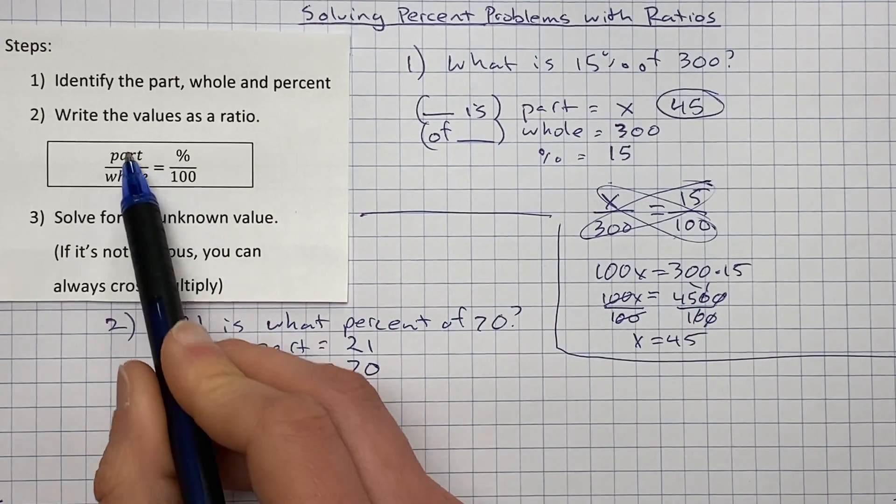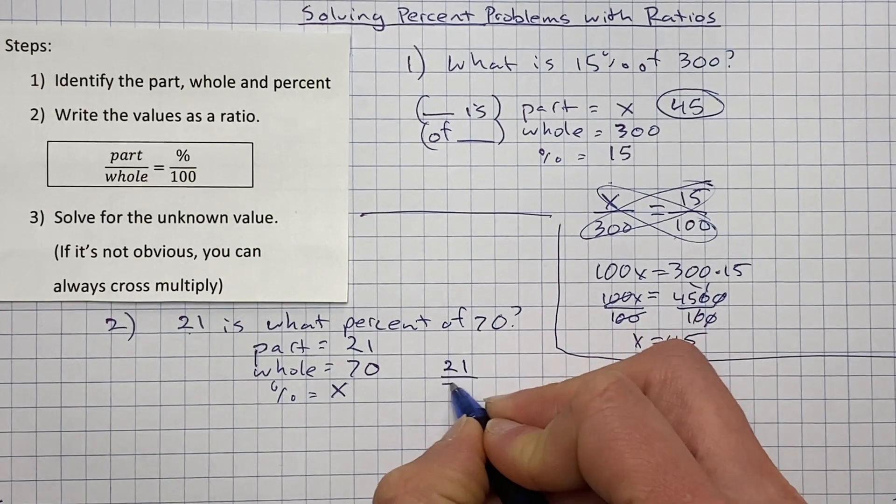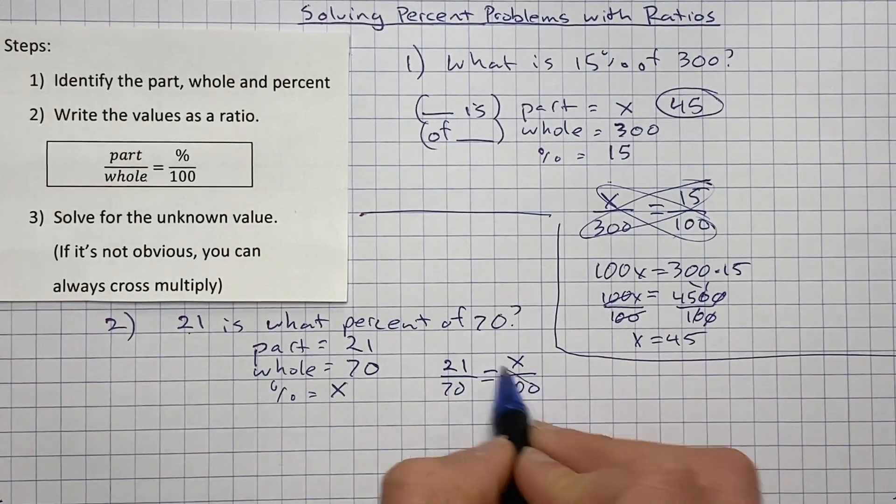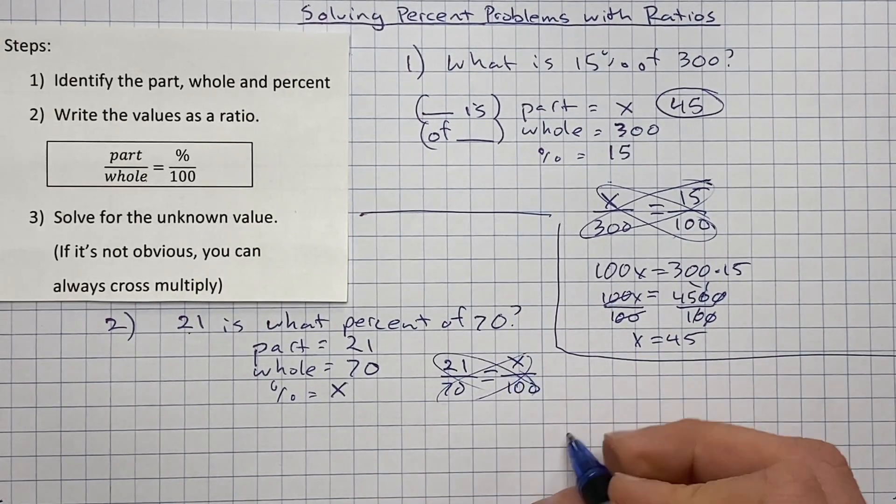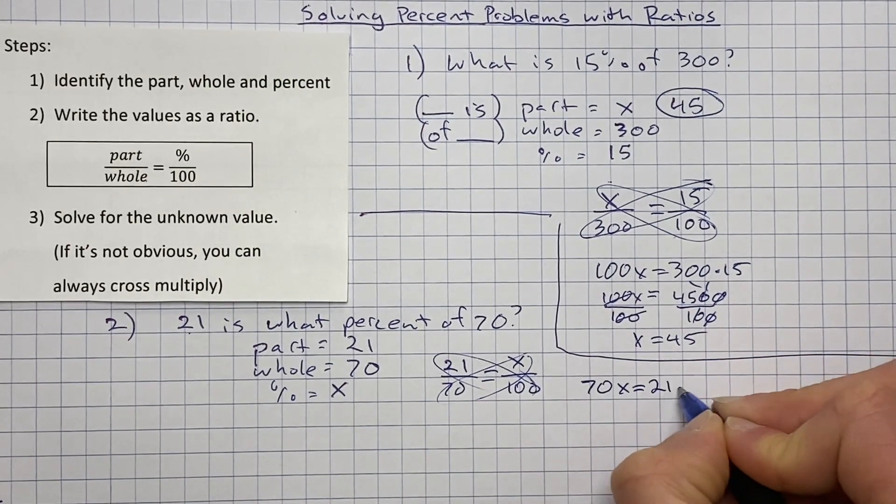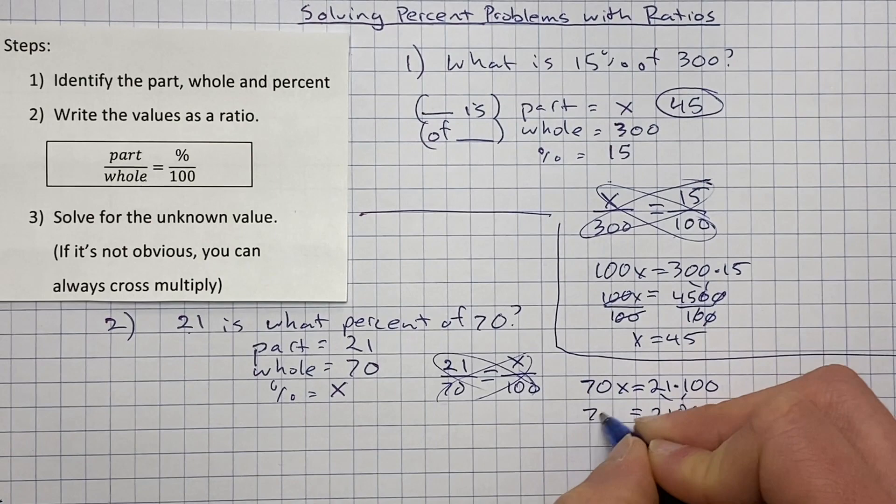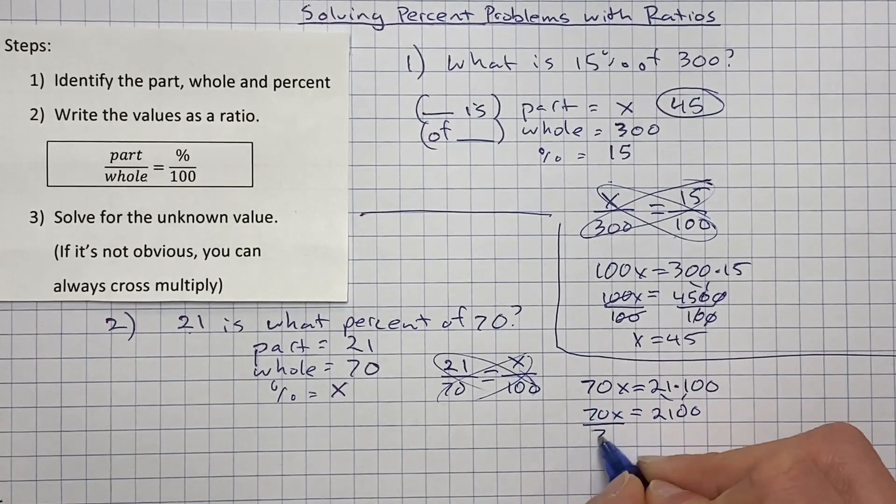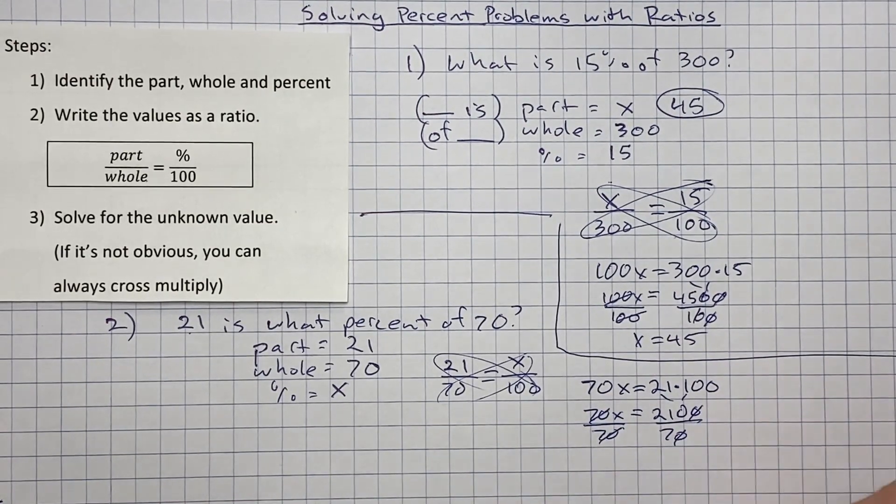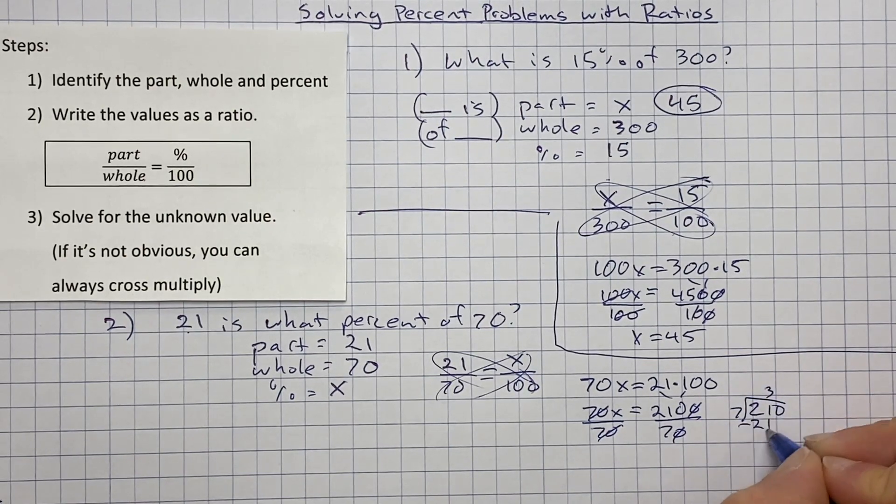We're going to put those into the ratio. Part over whole equals percent over 100. So I'm going to put 21 over 70 equals our percent is x. Our 100 is there. And now we just got to solve this. I'm going to solve this by cross multiplying again. That just reminds me of what I'm multiplying. So I would have 70x equals 21 times 100. Multiply those. I get 2100 equals 70x. Isolate the variable by dividing by 70 from both sides. Those cancel out. We can cross off 10, which means we're left with 210 divided by 7.